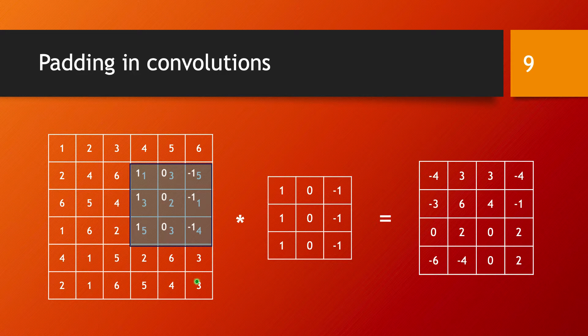The center of the filter never has a chance to scan those edge positions because that would mean the filter would hang outside of your matrix, making calculations impossible. So you don't take advantage of a lot of information sitting on the edges of your input matrix, and that's a problem because that's potentially valuable information that you might want to use in your learning algorithm.